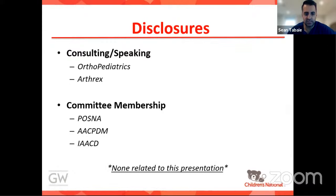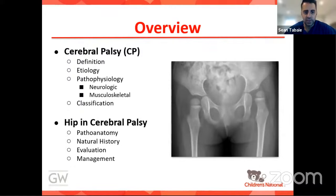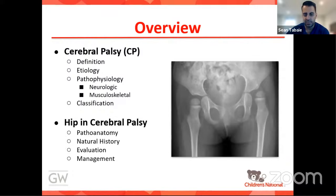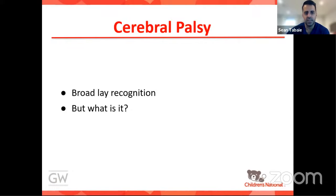Dr. Tabay has disclosures but nothing related to this topic. The overview will cover cerebral palsy — what it truly is, its etiology, pathophysiology (both neurologic and musculoskeletal), and its classifications. Regarding the hip and cerebral palsy, the talk will address pathoanatomy, natural history, evaluation, and management. Cerebral palsy has a very broad kind of recognition; most people, including other practitioners in medicine, simply categorize children with CP without a true understanding of what it is.